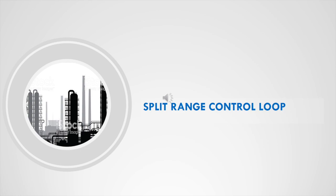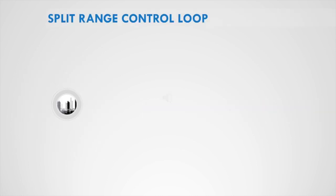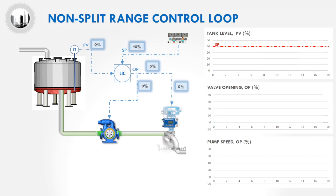In this video, we will learn about split range control. To understand the common terms used for process controllers like process variable PV, set point SP, and output OP, you can watch the previous video available in this channel.